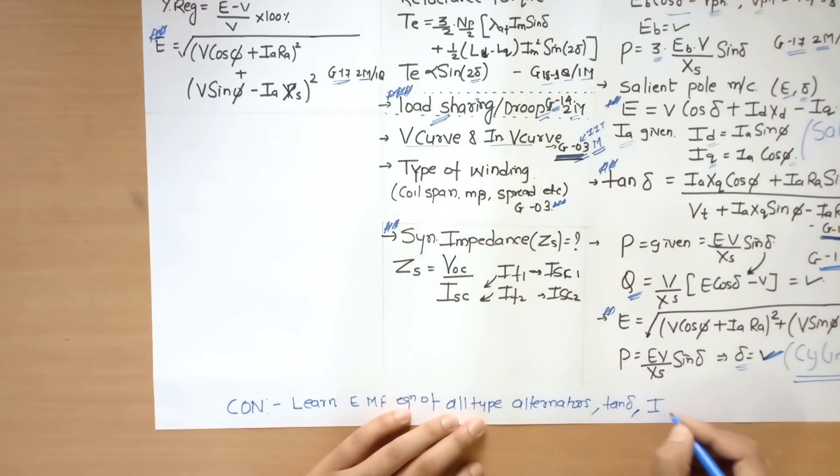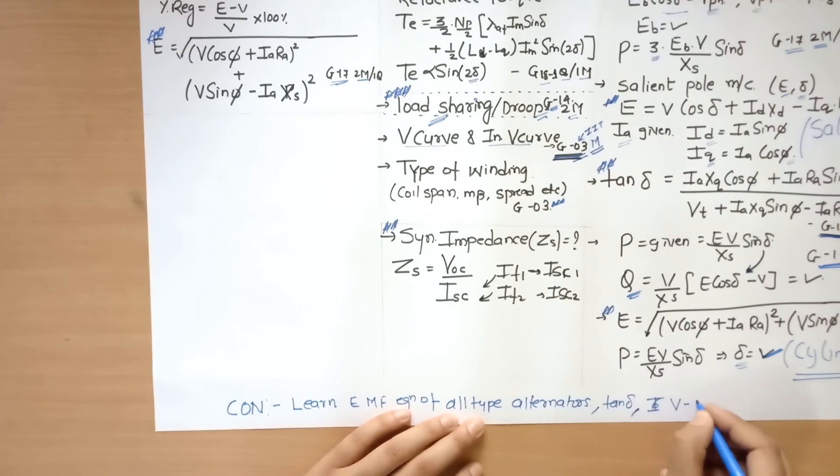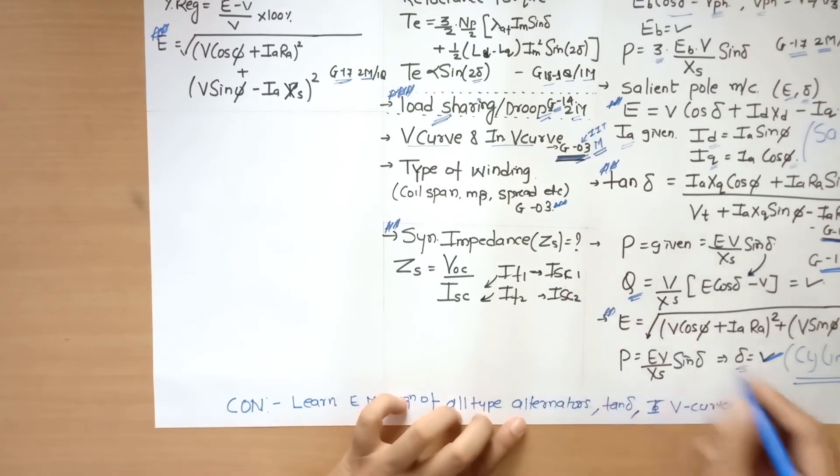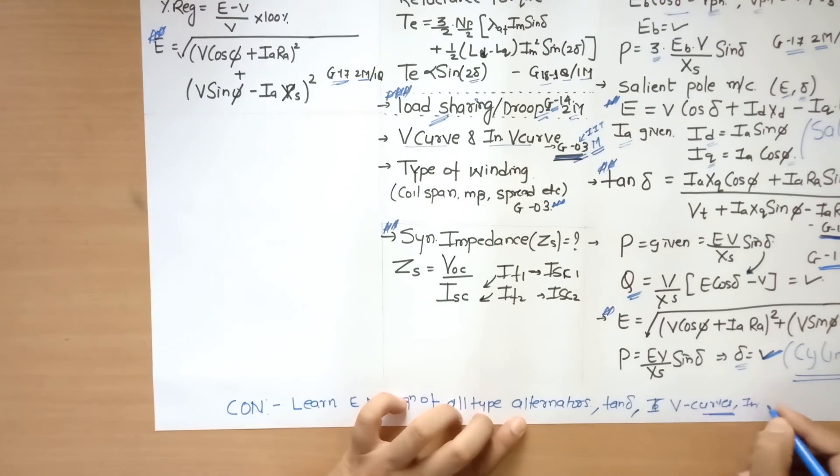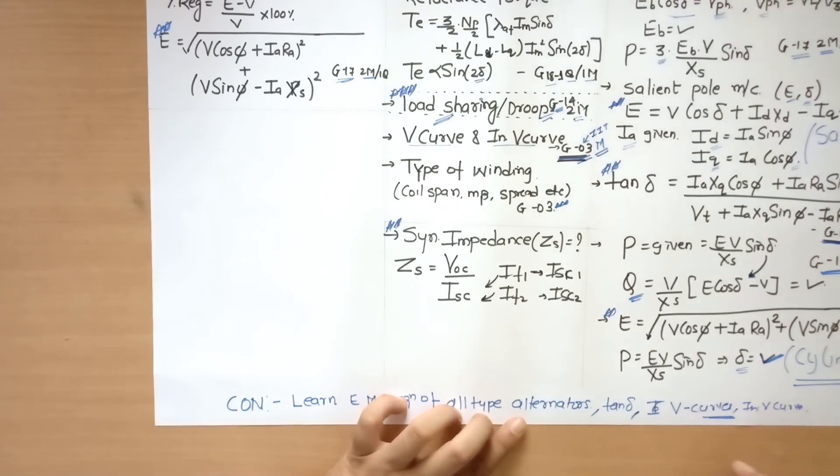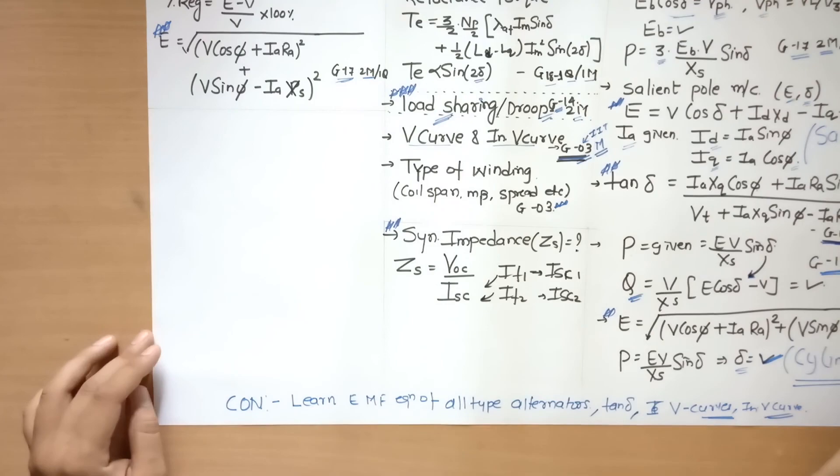You need to understand V curves. V curves are basically simple V curve and inverted V curve. So I think this is sufficient for getting good marks in synchronous machine.